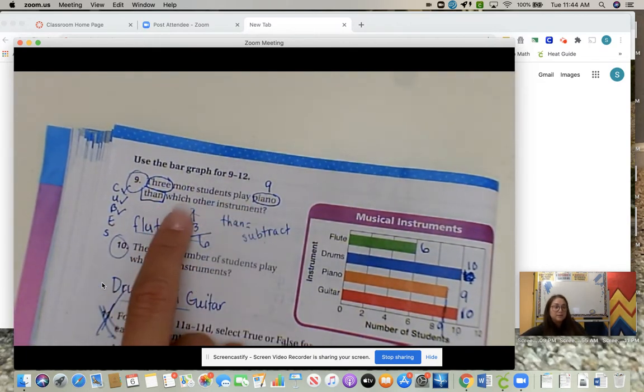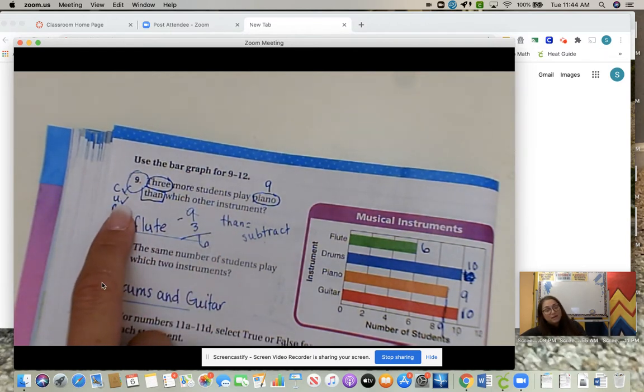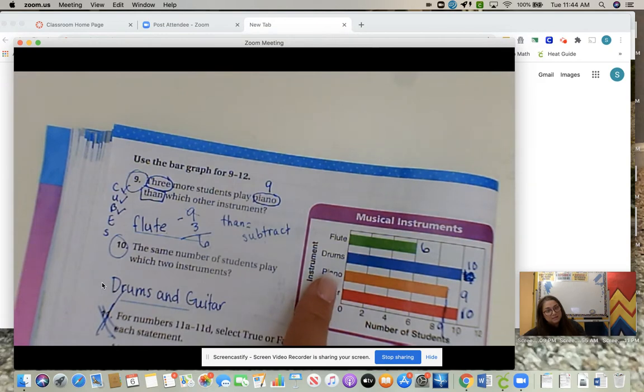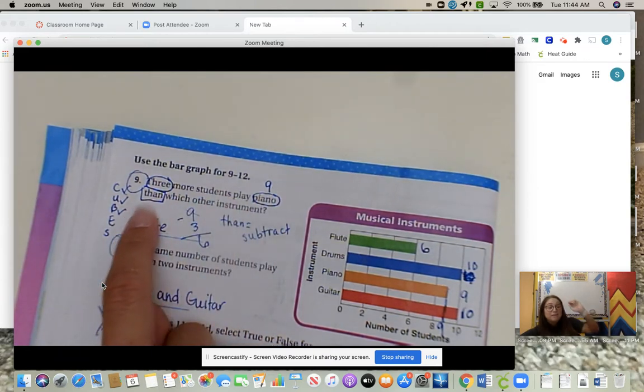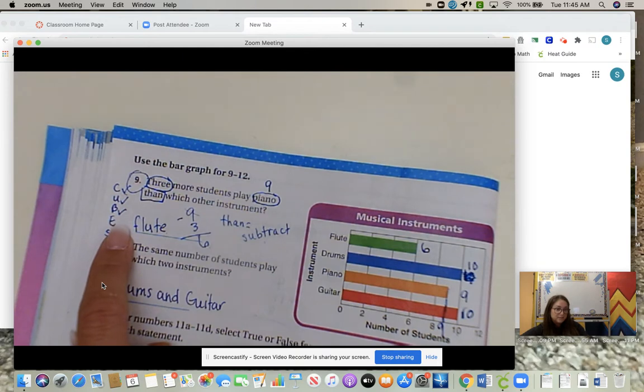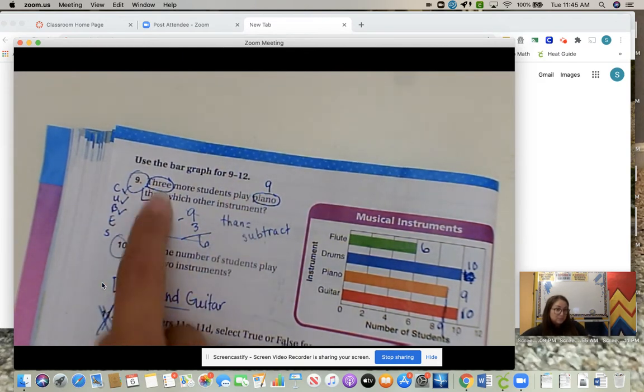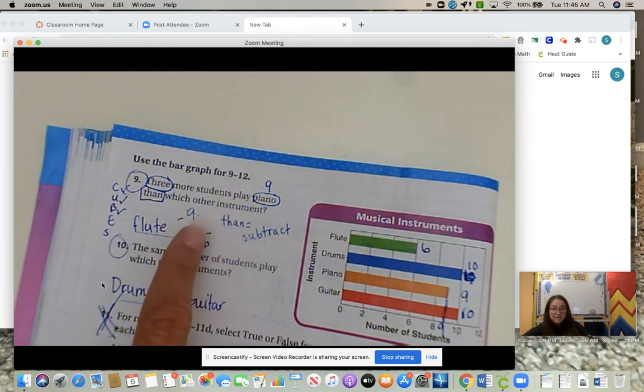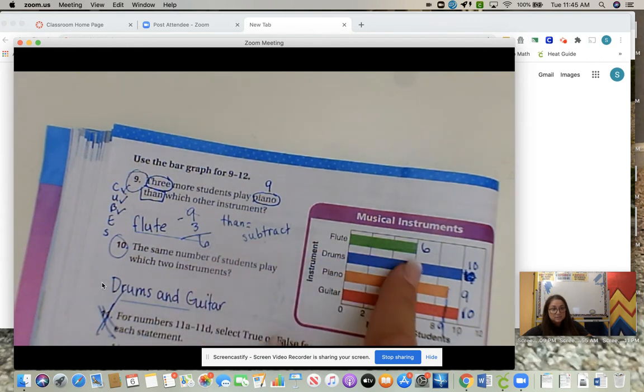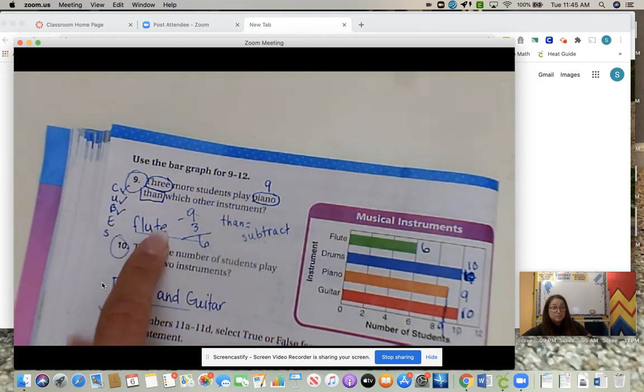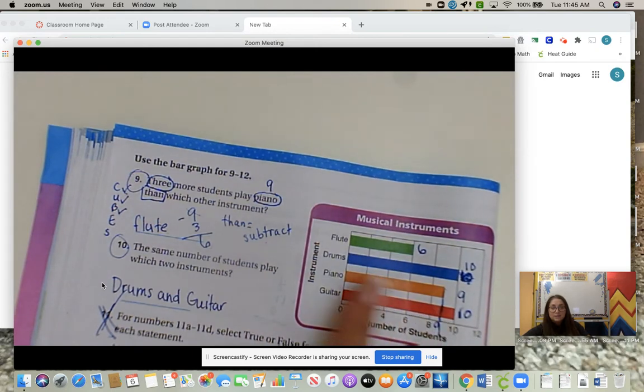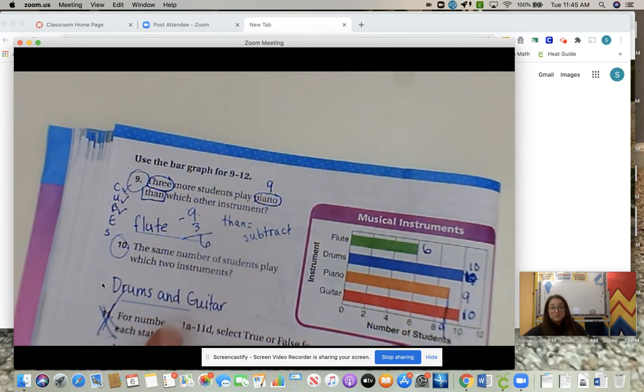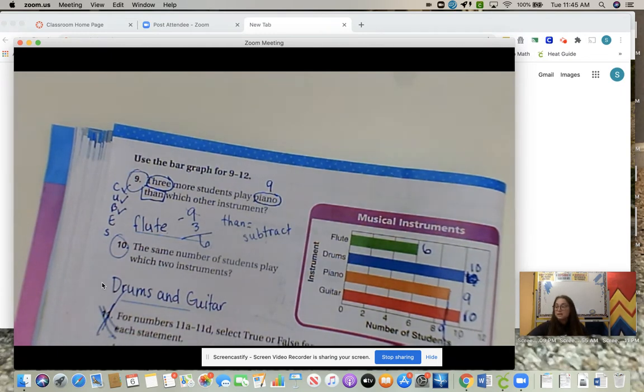Number 9. Three more students play piano than which other instrument? We have to do CUBES. The whole problem is the question. So we don't need to underline it. We need to circle our key numbers. 3 and then piano. How many instruments of pianos? We have 9. So that's where we get 9. Our math verbs, than, means to subtract. So we need to evaluate and think. What are we going to do? Well, we're going to subtract 9, subtract 3, which gives us 6. But it's asking for an instrument. It's not asking for a number. So what instrument shows 6? Flute. So our answer is flute. Number 10. The same number of students play which 2 instruments? Well, just look at your graph. Guitar and drums. Or drums and guitar. That's fine. Just 10 for both. You're not doing 11 or 12.